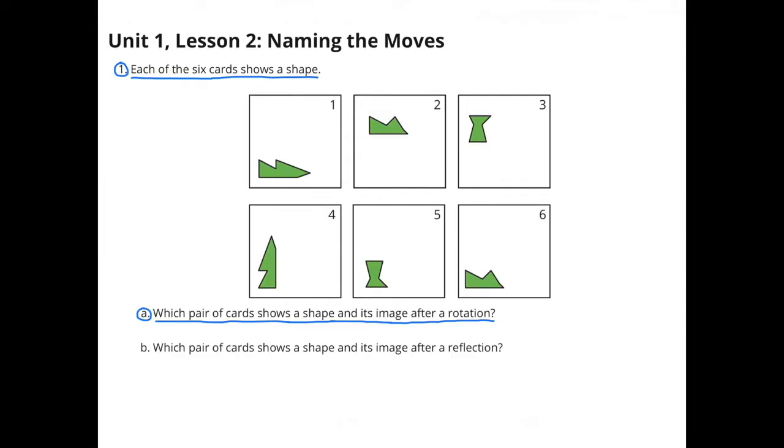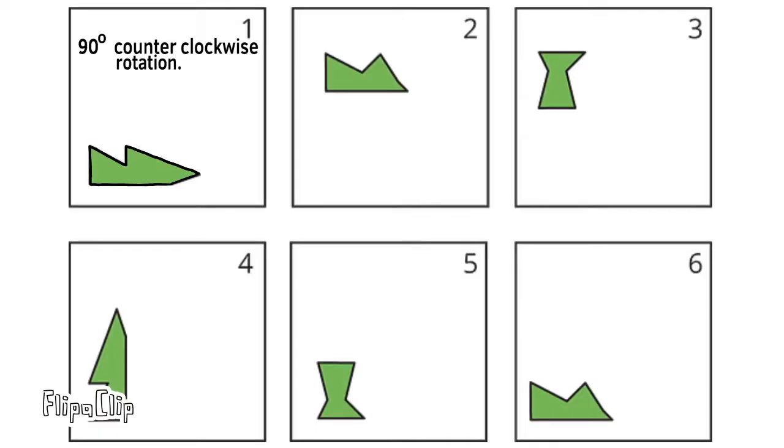Each of the 6 cards shows a shape. A: Which pair of cards shows a shape and its image after a rotation? Look at the shape on card 1.